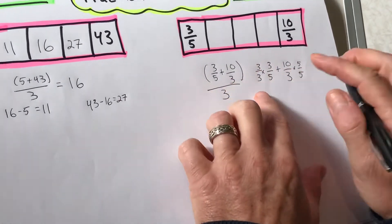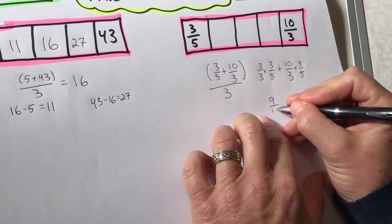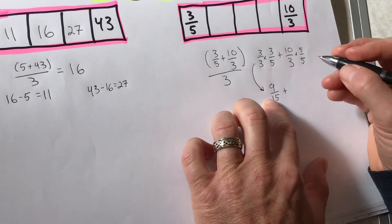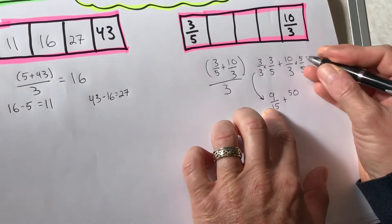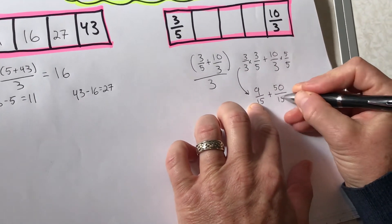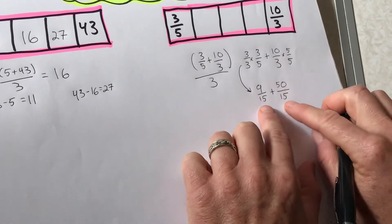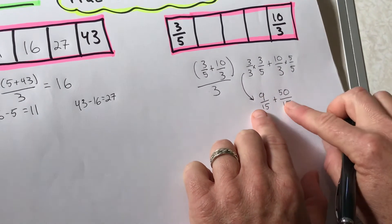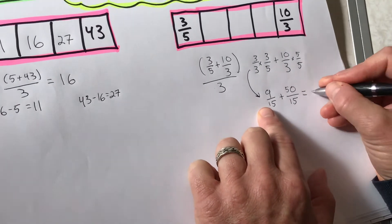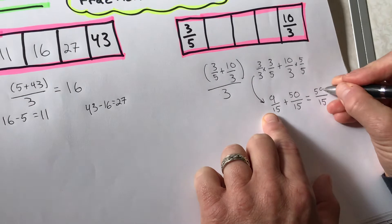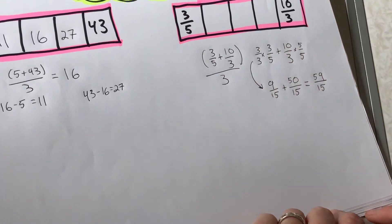So what I get here is I get 9 fifteenths. That gives me 9 fifteenths plus 50 fifteenths. I'm not gonna worry about simplifying the fraction just yet. And of course, when I combine these together, I do not add the denominator. I just add the numerator and I get 59 fifteenths for that.